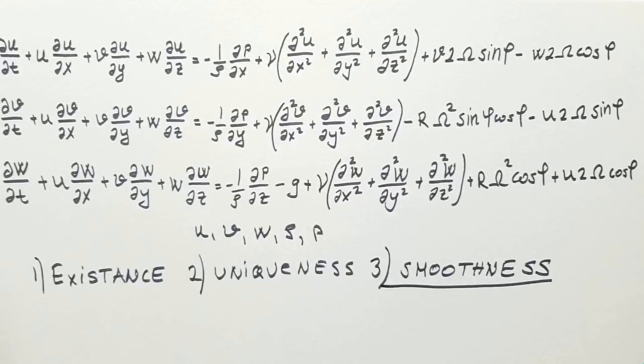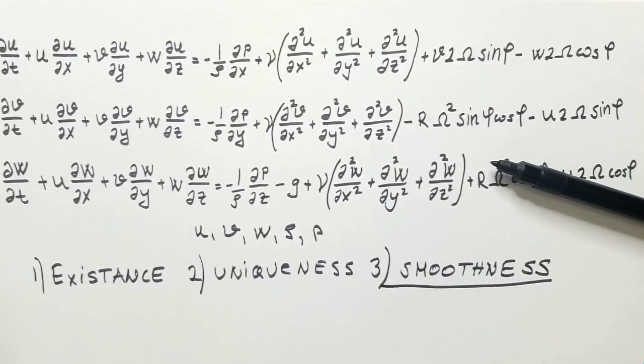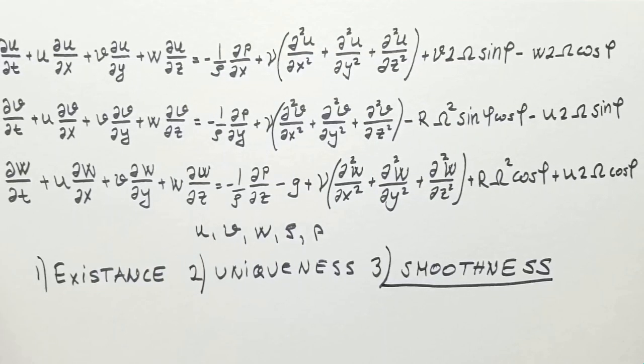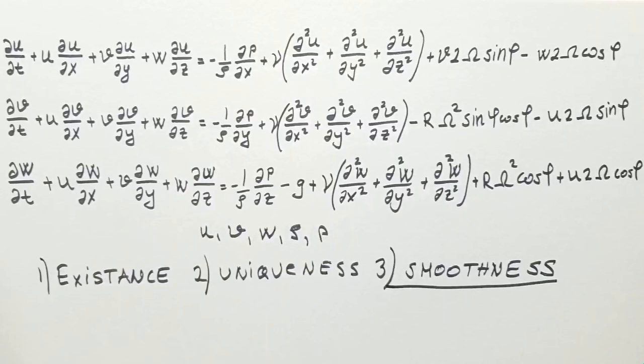In May 2000, the Clay Mathematics Institute in New Hampshire included Navier-Stokes equations in the list of several fundamental mathematical problems that are still unsolved. The prize for solving these problems is one million US dollars. Out of these seven millennium problems, only one is solved, Poincaré conjecture. Russian mathematician Gregory Perelman solved it and then refused the one million dollar prize.